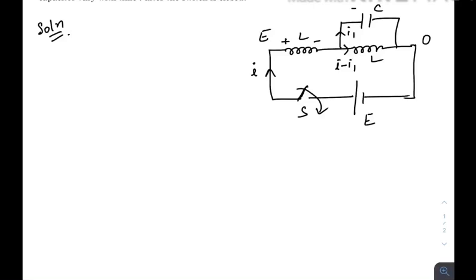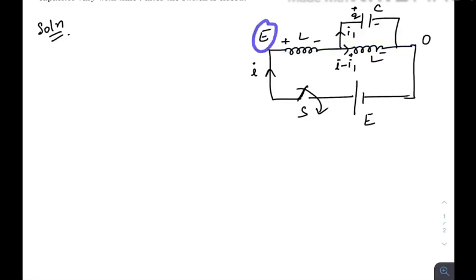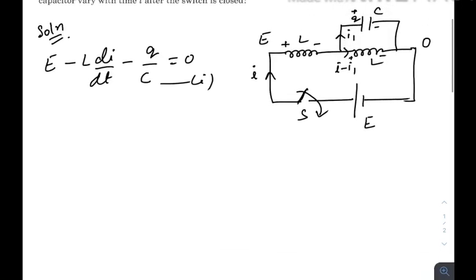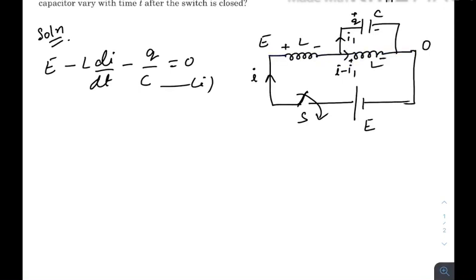At any instant t, let me consider that there is charge q stored inside the capacitor. Now let us write the potential equations considering one path and a second path. The potential is E, then going along the first path: E minus L·di/dt minus q/C equals zero. This is our first equation. Going through the second path directly: L·di/dt minus L·d/dt·(i minus i₁) equals zero.